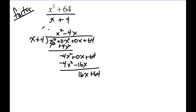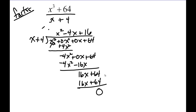Then we ask: what do we multiply here by? Plus 16. We finish our division — that gives 16x plus 64. We finish the problem because you want to make sure you end up with no remainder, as that is critical. If you do this and do not end up with no remainder, then you haven't done the division correctly. It should always end up with no remainder.